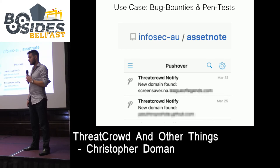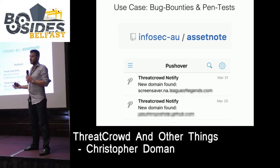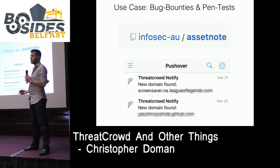Another use case I wasn't expecting is more on the offensive side. There's an API in ThreatCrowd — that big database of domains — and people are using it in bug bounties and pen testing. When people are looking for that low-hanging fruit, a lot of people are making pretty good cash on bug bounties by finding an old dev server on some weird subdomain that's been left up, that kind of thing.